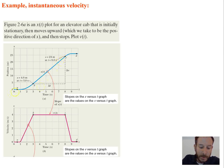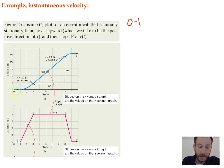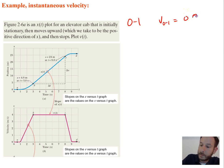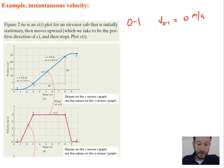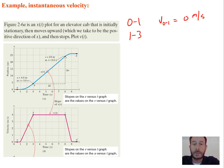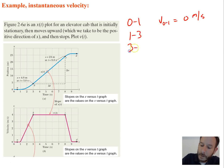From 0 to 1 second, the position isn't changing at all, so the velocity from 0 to 1 is just 0. From 1 to 3 seconds, it's slowly accelerating because the position is not changing at a constant rate — that means it must be accelerating. We can't solve for the exact value without more information, so let's move on to the segment from 3 through 8.